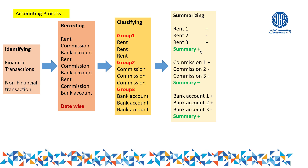In accounting, we don't use the terms positive and negative but have specific terminology — we'll explain later. For rent, sometimes you receive rent (positive) and sometimes you pay rent (negative). If you receive more than you pay, the total is positive. Commission: if total payment is more, the result is negative. For bank account, if you deposit more than you withdraw, your deposit balance is higher than withdrawal.